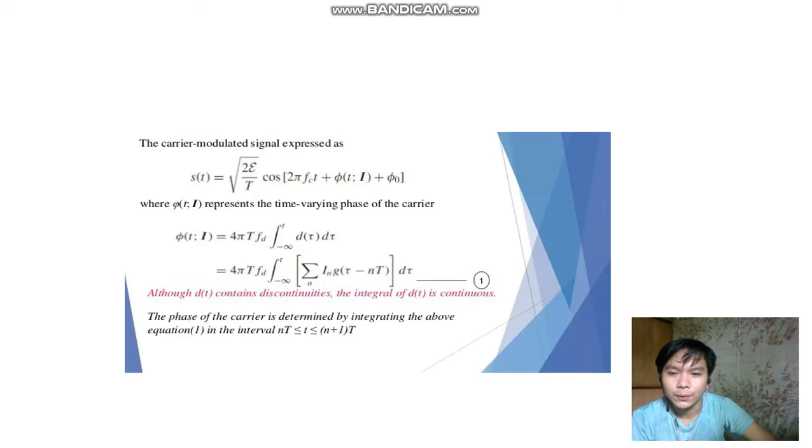θ(t) equals 4πF_d T integral of d(t')dt' equals 4πF_d T integral from negative infinity to t of summation of I_n g(t' minus nT).